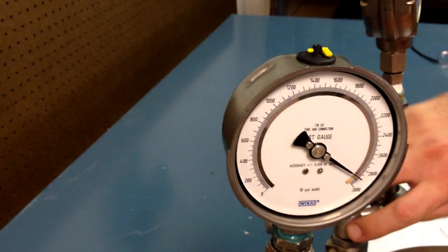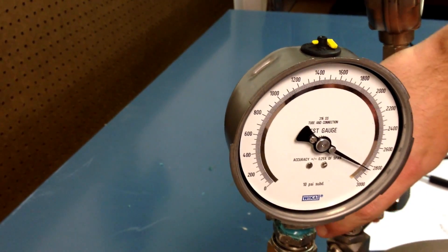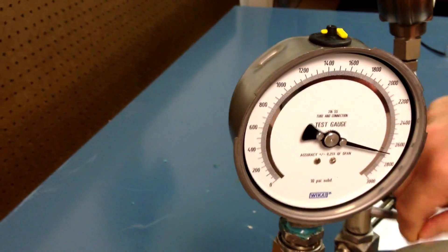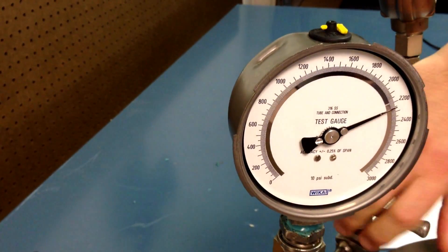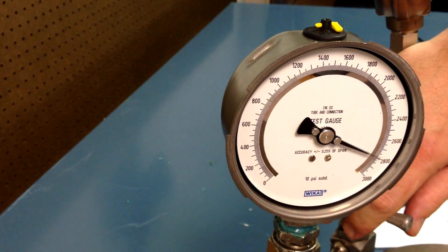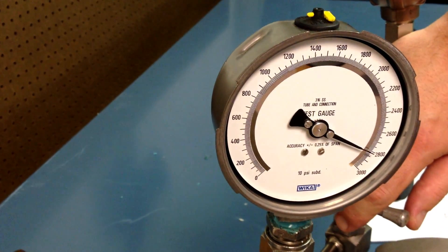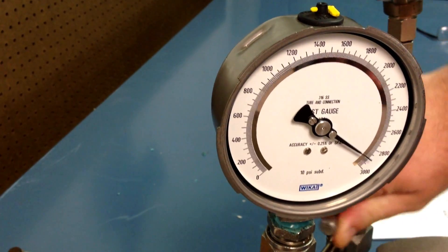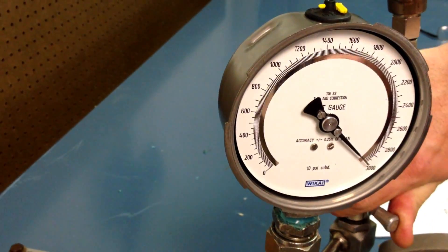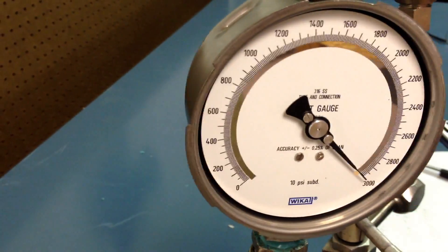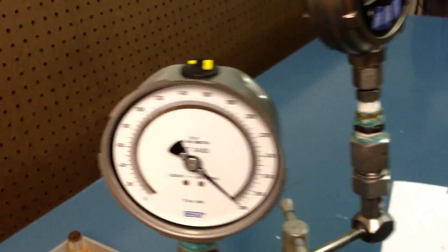Next point is 3000 PSI, full scale. Do my fine adjustment here. Which is right about there. 3000 PSI. I'm at 2952.